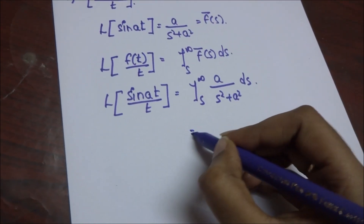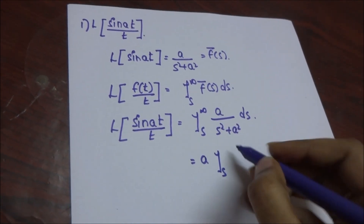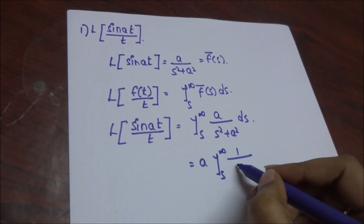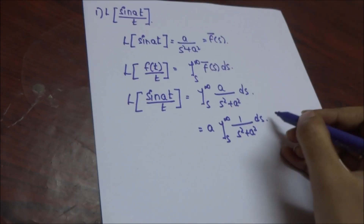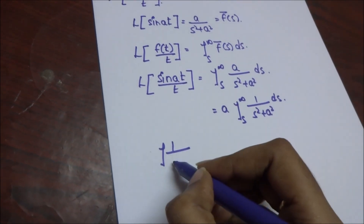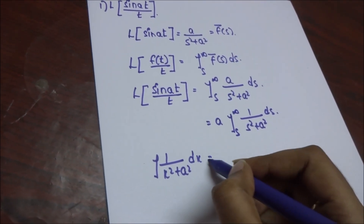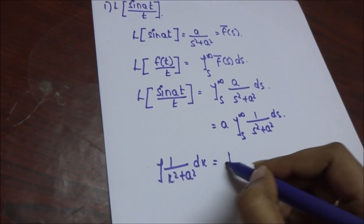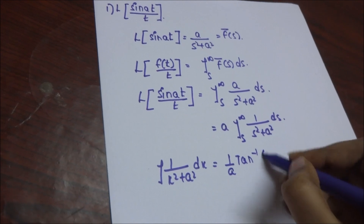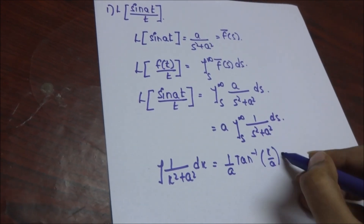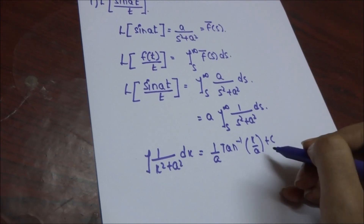Here we are taking constant a outside the integral: a times the integral from s to infinity of 1/(s² + a²) ds. We know that the integral of 1/(x² + a²) dx is equal to (1/a) tan⁻¹(x/a) + C. This is one of the important formulas used in this method.